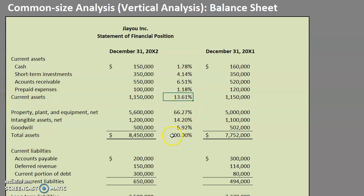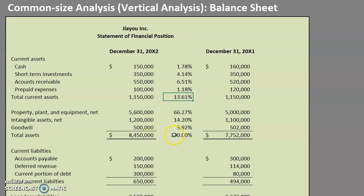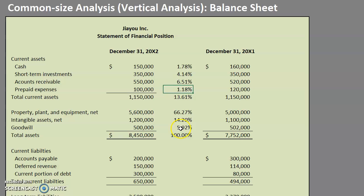Now we can better envision what the breakdown of this 8.45 million is. We have current assets here — total current assets make up about 13.61 percent of our total balance. It's really our PPE that's eating up the most at 66.27 percent. This gives business owners a better idea about the breakdown of these numbers. As always, make sure you're using those math lines and staying consistent with the line items on the actual statement.